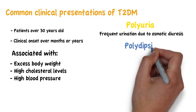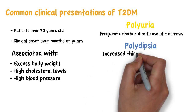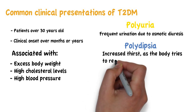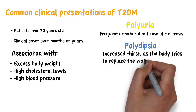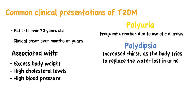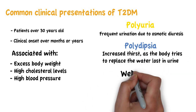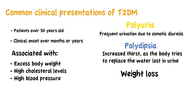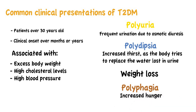Polydipsia, meaning increased thirst, as the body tries to replace the excess water lost in urine. Weight loss, as the cells are starving despite the abundant supply of glucose in the blood. And polyphagia, meaning increased hunger, as the cells are in need of nutrients, so the brain tells you to eat more.